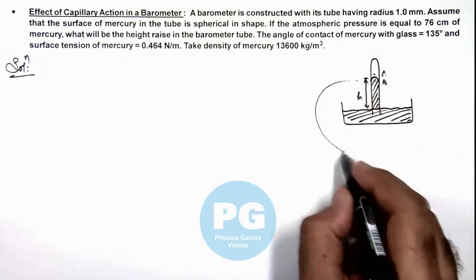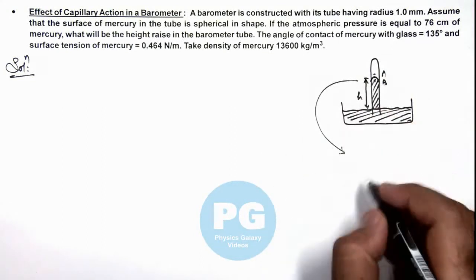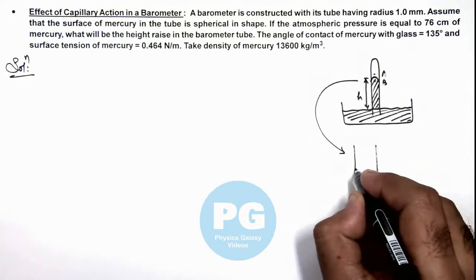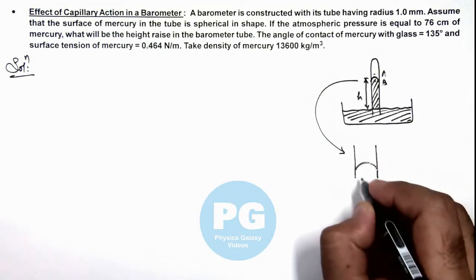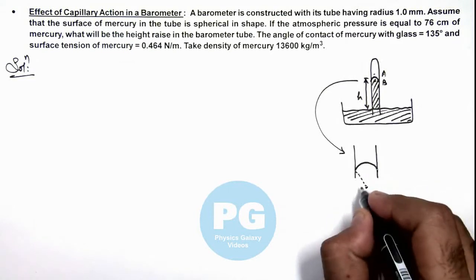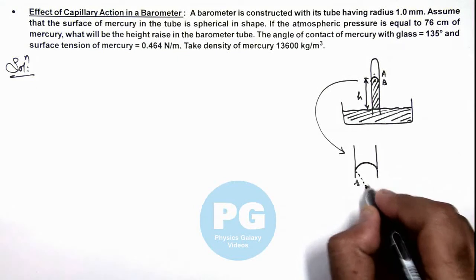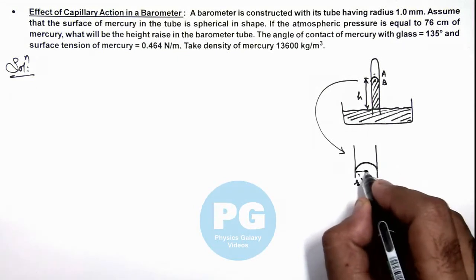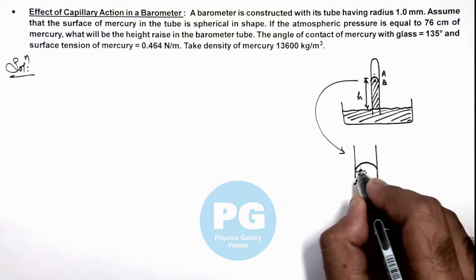If we draw the enlarged view of this section, we can see in this tube, this is the mercury meniscus. If small r is the radius of curvature of this meniscus and capital R is the radius of the tube.